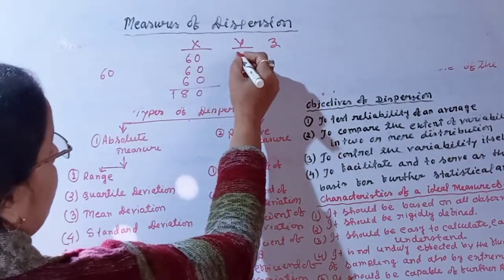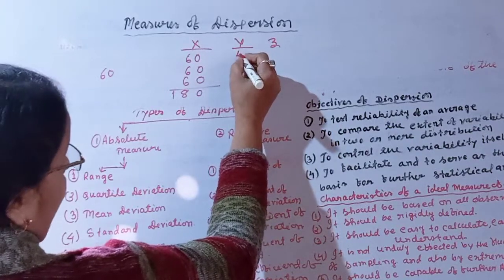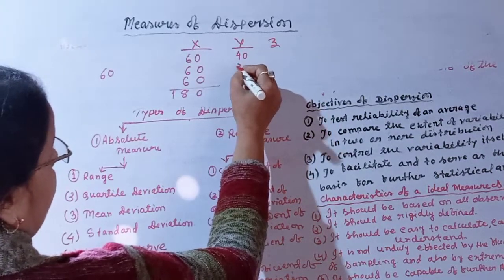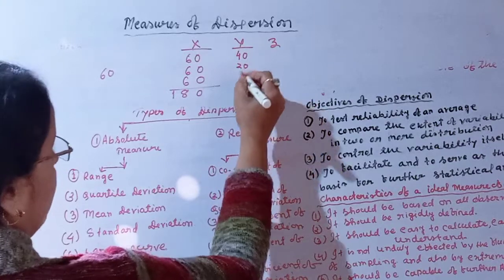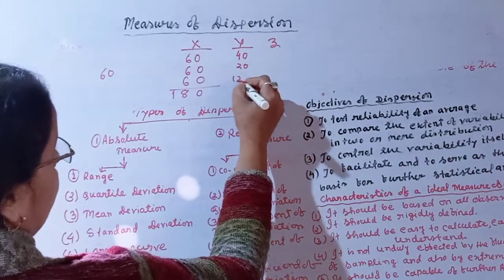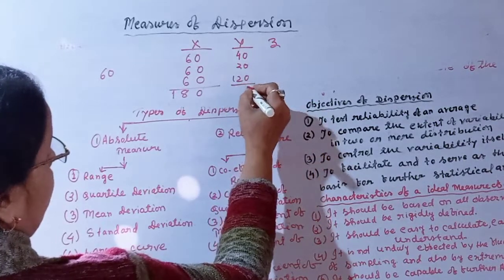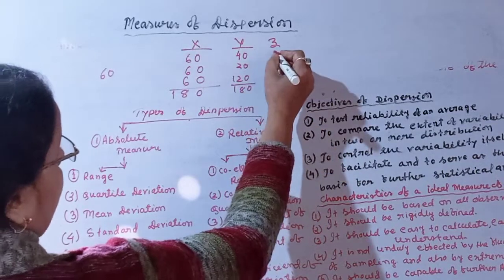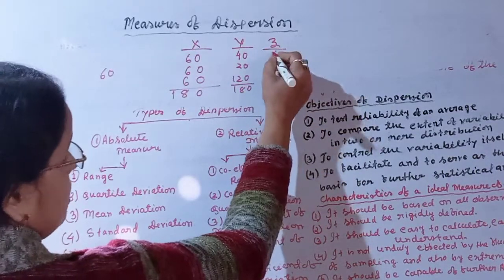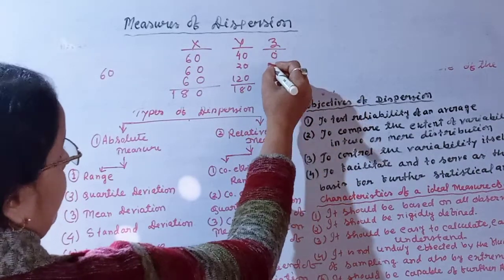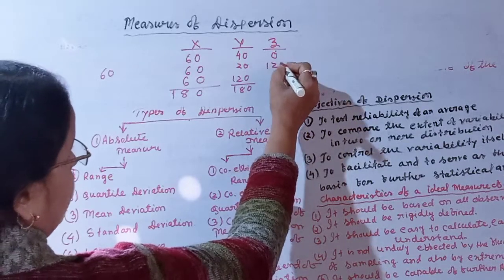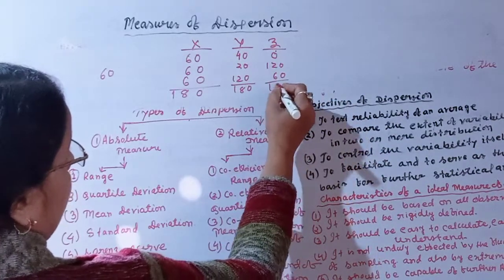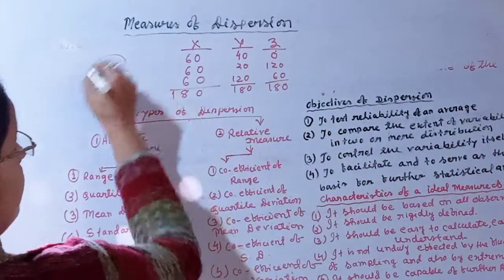The Y series has values 40, 20, and 120, with a total of 180. The Z series has values 0, 120, and 60, also totaling 180.